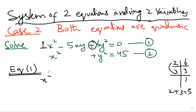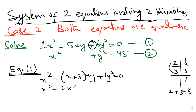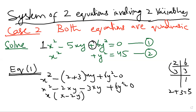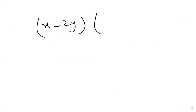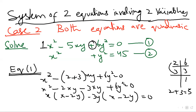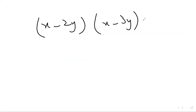Writing out equation 1: x² − 2xy − 3xy + 6y² = 0. Grouping: x(x − 2y) − 3y(x − 2y) = 0. Since the bracket (x − 2y) is common, we factor it out to get (x − 2y)(x − 3y) = 0.